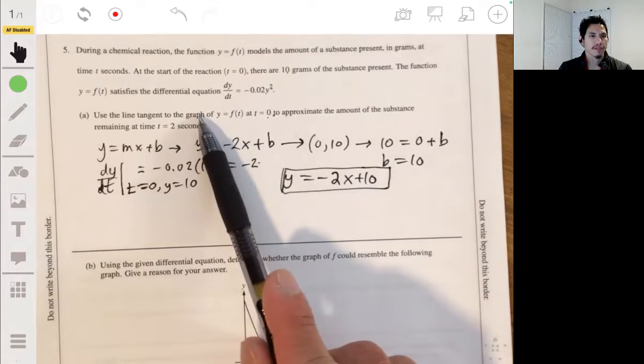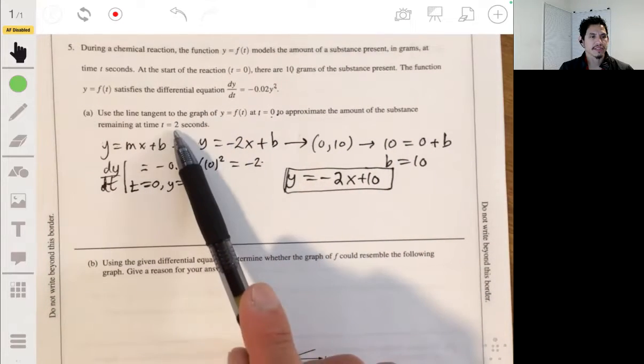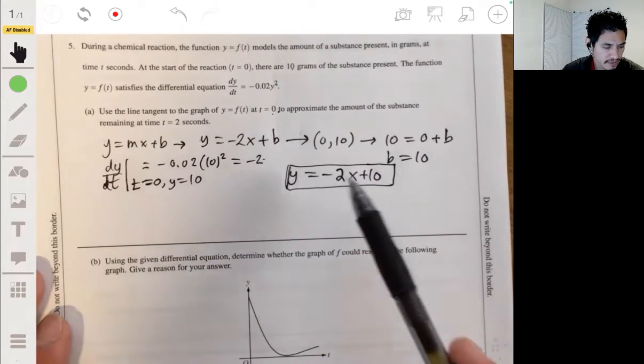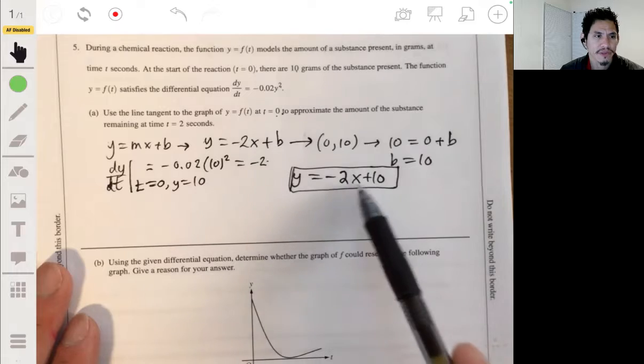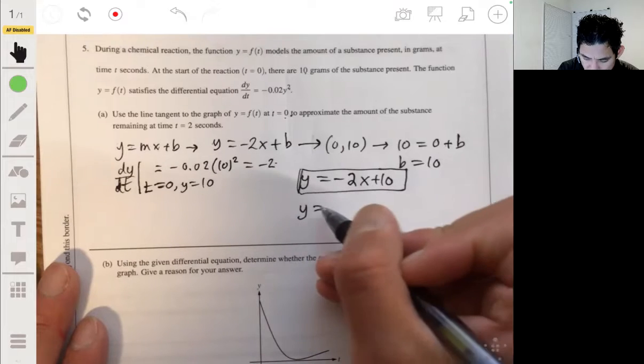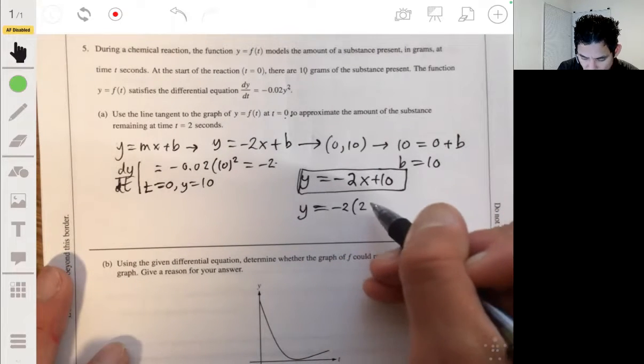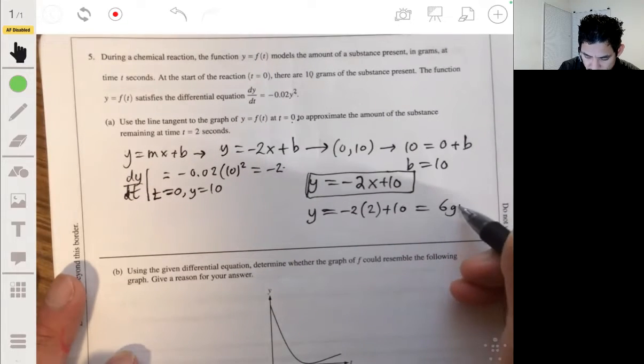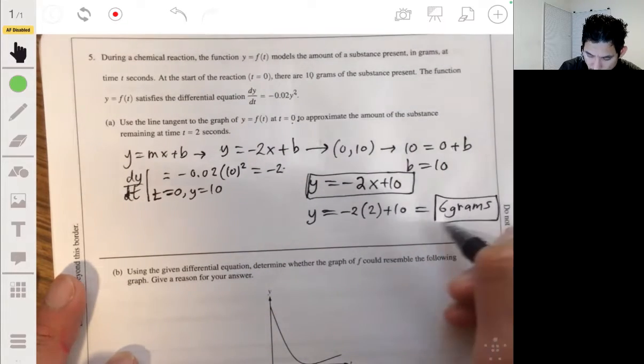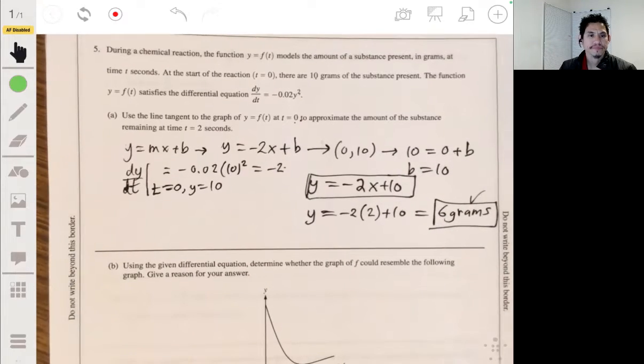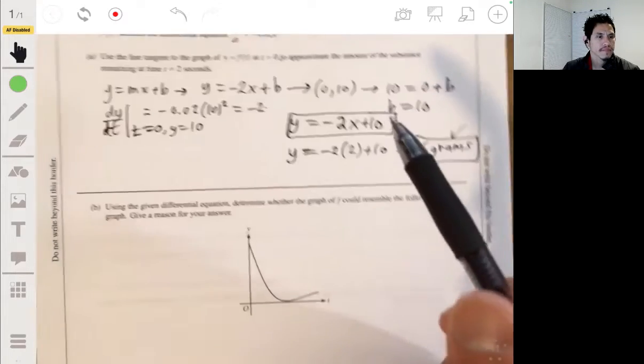And then we approximate what the amount of substance is left at t equals 2 seconds by plugging 2 in for x here. When t equals 2, we'll get negative 2 times 2 plus 10. So we get negative 4 plus 10. So we get 6 grams as our answer.